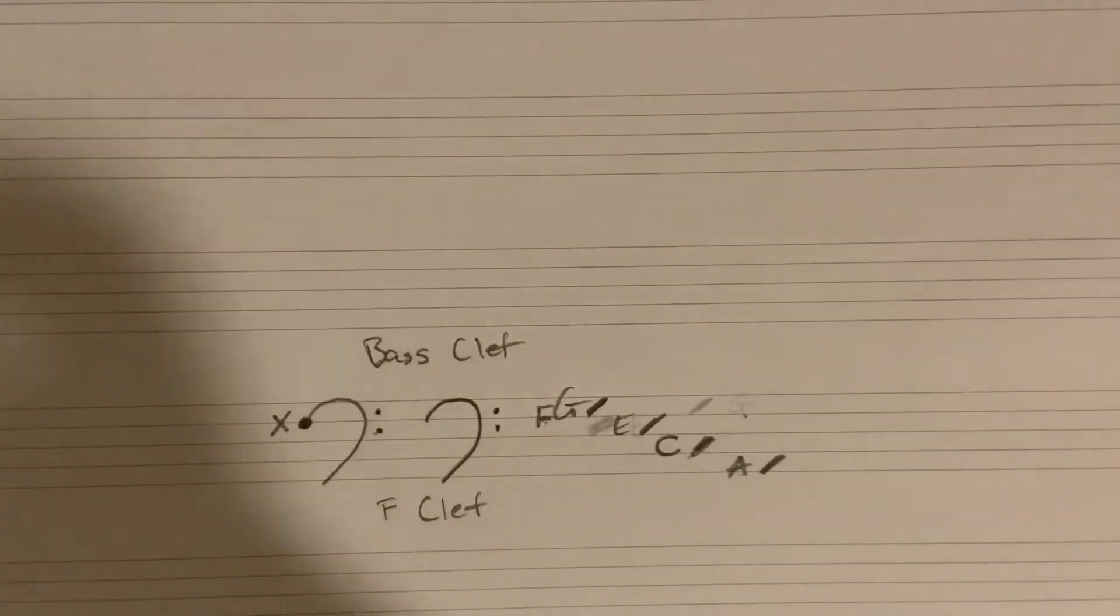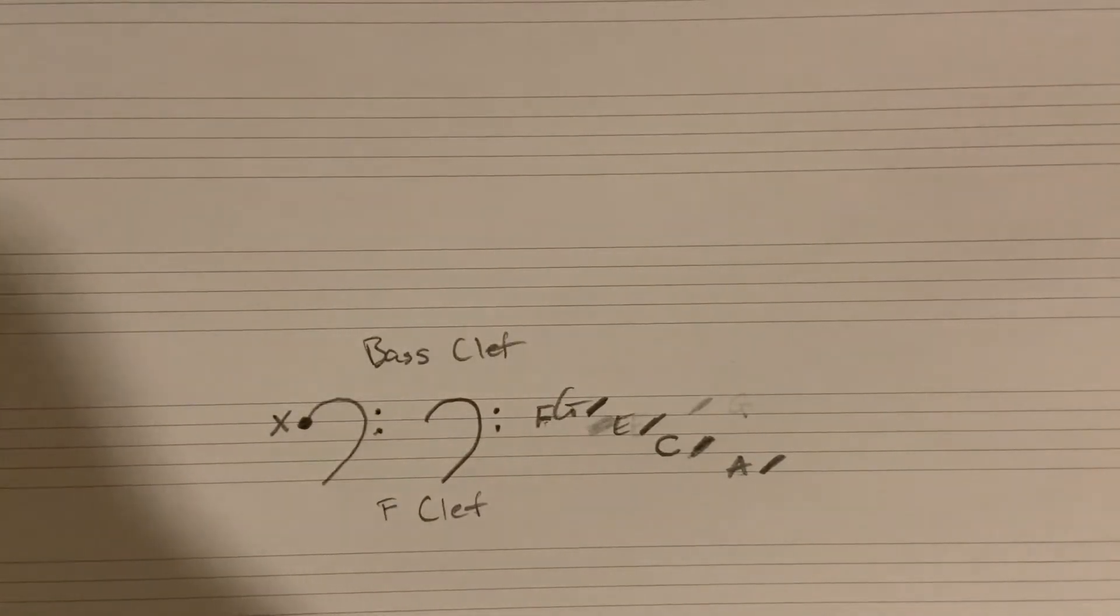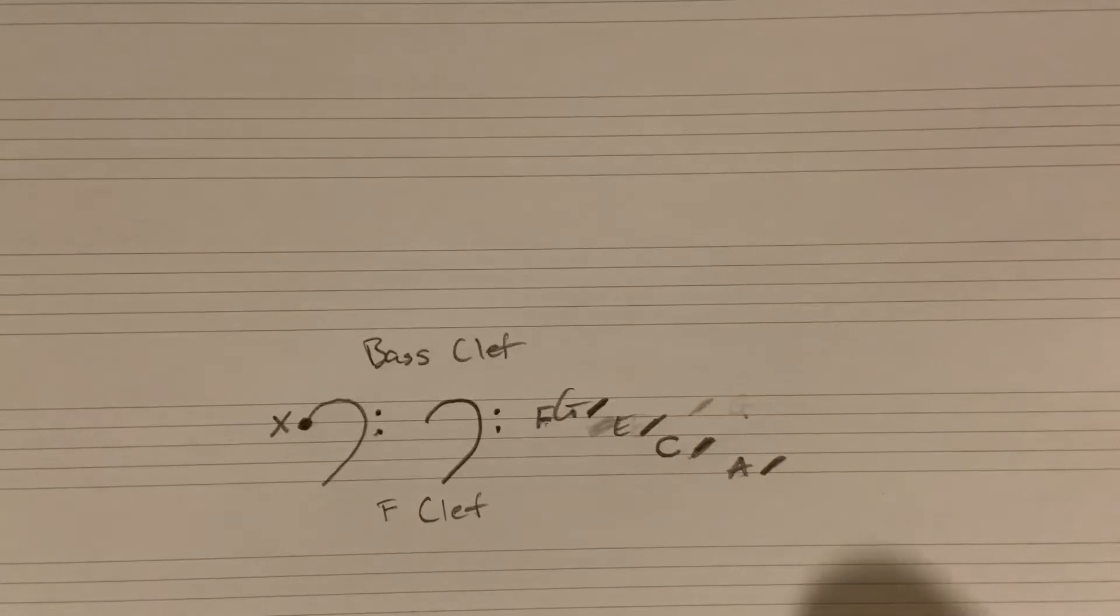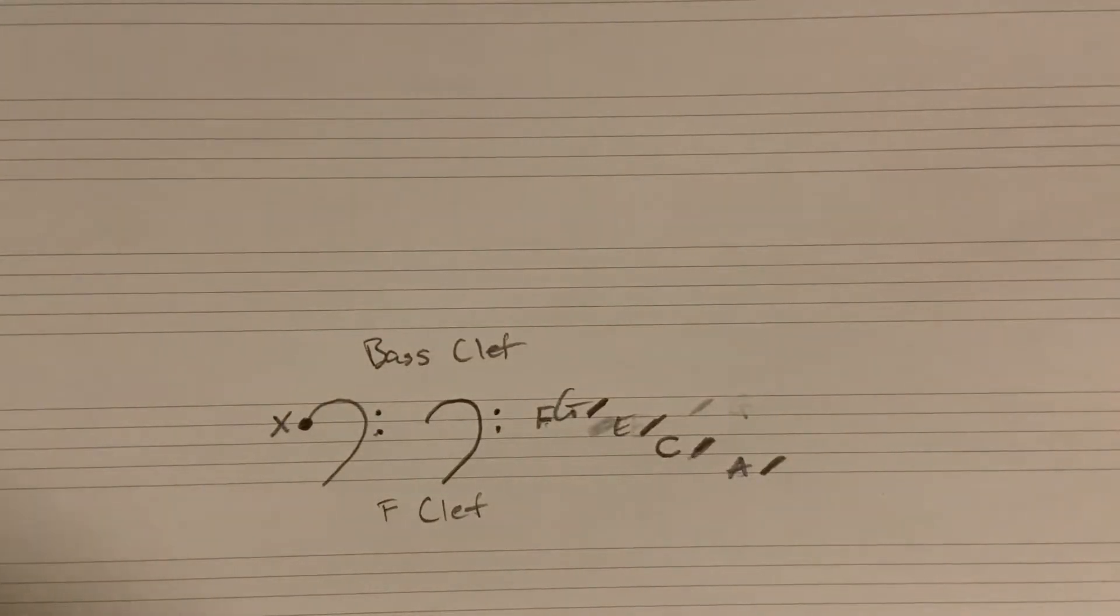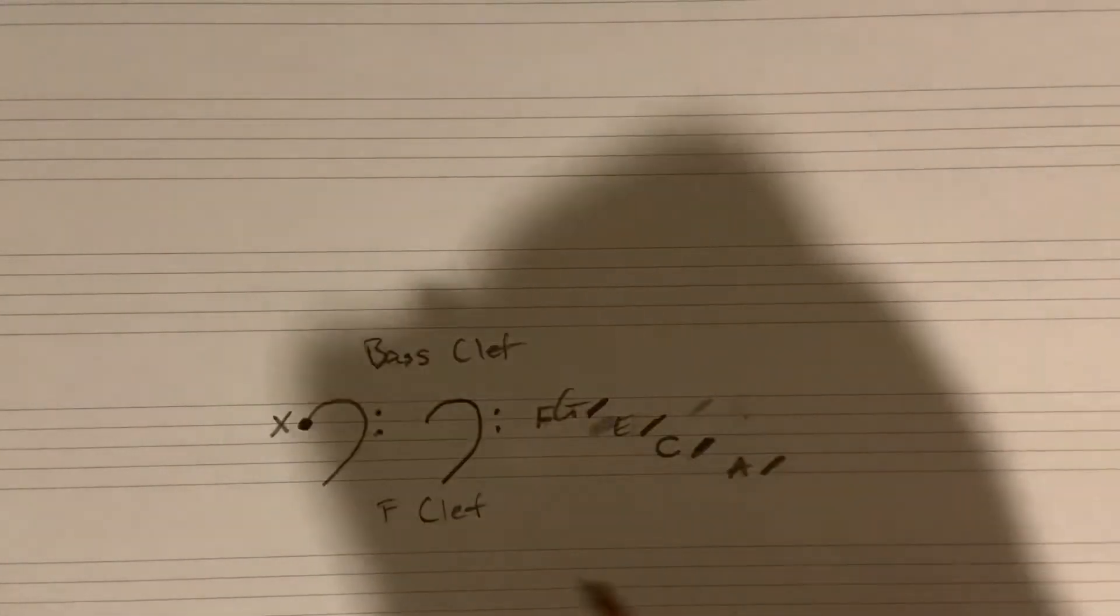So now we have A, B, C, D, E, F. So that's where our E comes from here. If this is confusing to you, please feel free to ask me questions, ask your peers questions, I'm all for you guys helping each other. So let's keep going here.